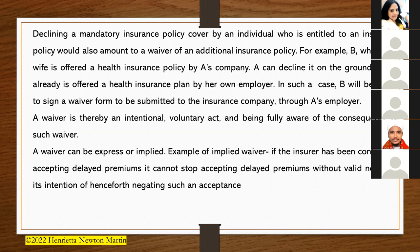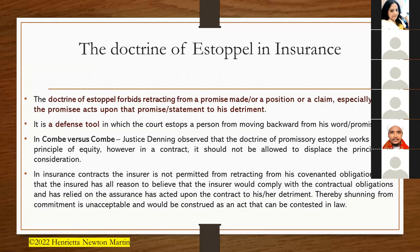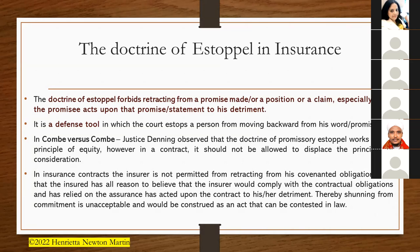The doctrine of estoppel in insurance forbids retracting from a promise, position, or claim — especially when the other party has acted upon that promise to their detriment. It is an equitable doctrine, coming within the ambit of the laws of equity, and serves as a defense tool in which courts stop a person from moving backward from their word of promise.